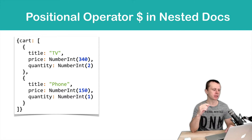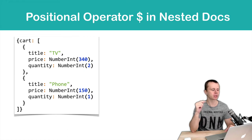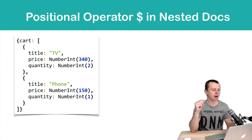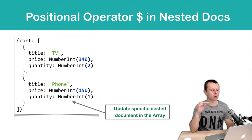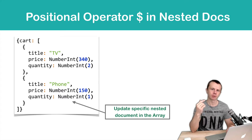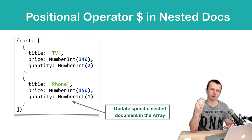Cart is an array that contains two nested documents, and each nested document has three fields inside of it: title, price, and quantity. Let's suppose we want to change the second document where the title is 'phone' and we simply want to change the quantity, for example.